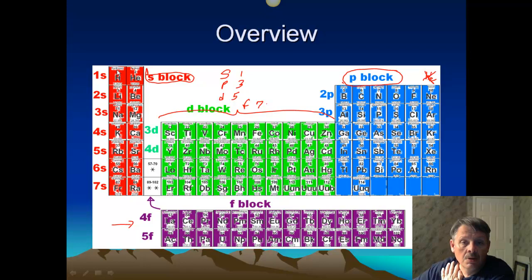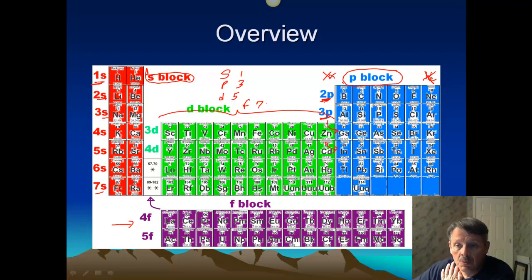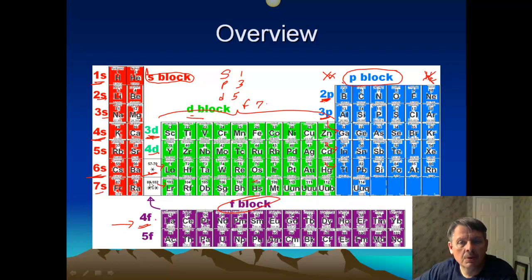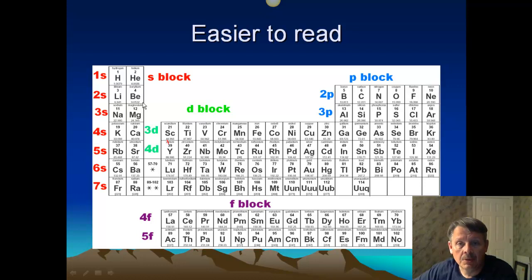Starting with 1S, then 2S through 7S. The P block starts at the two level — no P at the one level. Gallium does 4P, indium does 5P, and so on to 6P. The D block starts at three — so we have 3D, 4D, 5D, and 6D. The F block has two levels: 4F and 5F. Notice it starts at four, even though it's in the sixth period. So it goes S, P, D, F — one, two, three, four.